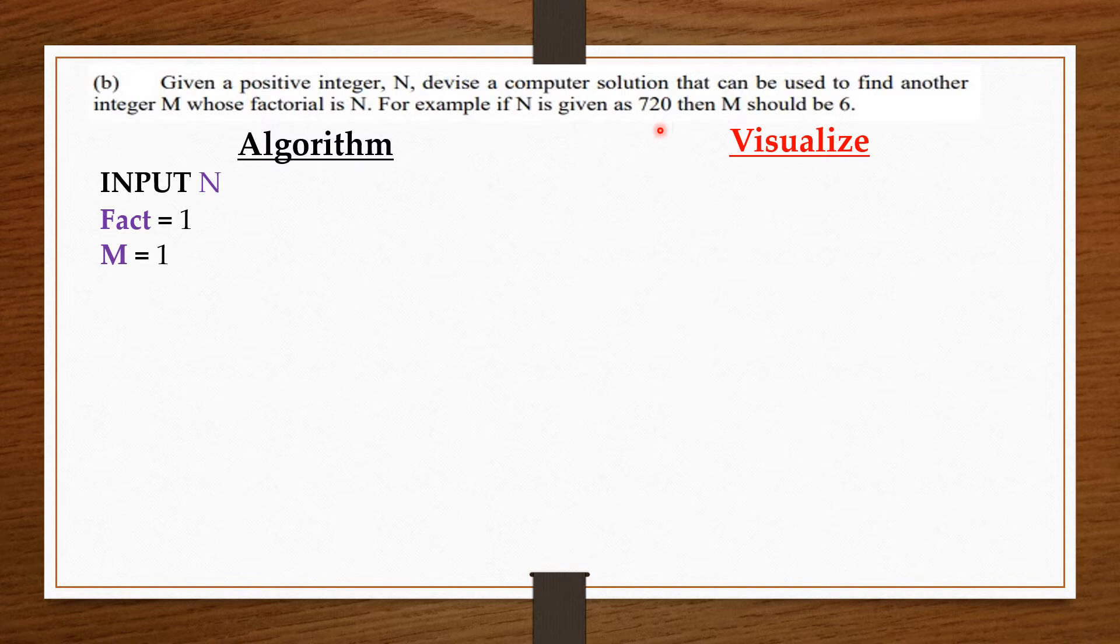So, 1 by 2 by 3 by 4 until we get the value of N. When we get the value of N, we are going to say that if the fact is equal to N, then it is a factorial of it. Else, then it is not. So, we are going to keep multiplying 1 by 2 by 3 by 4 by 5 until we get the value of N. So, we say that while fact is less than N, fact times equals M, M plus plus, end while.